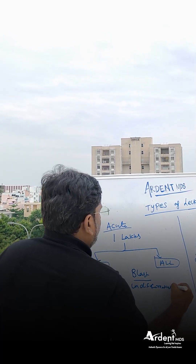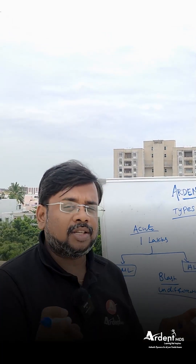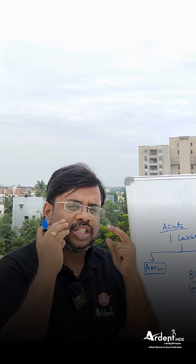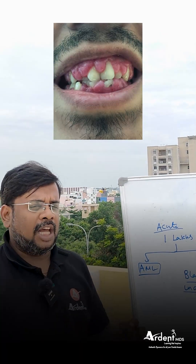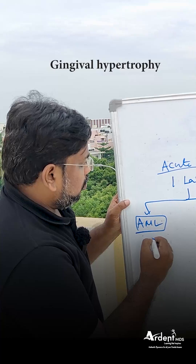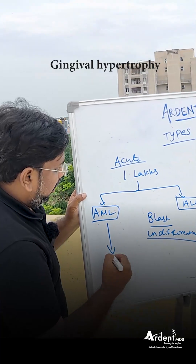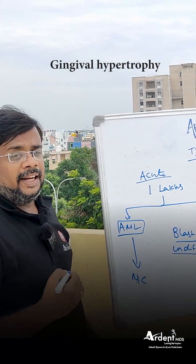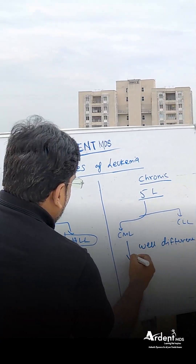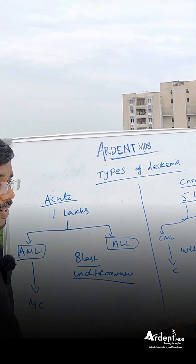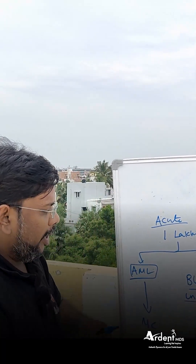Something related to dentistry is very important here. Gingival hyperplasia — many times asked in exams — which type of leukemia is it most common in? It is most common in myeloid leukemia, especially acute myeloid leukemia (AML). It is also seen, but less commonly, in CML, ALL, and CLL.